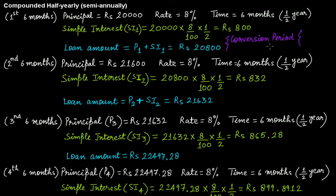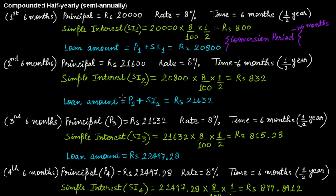The conversion period in the case of interest compounded half-yearly is six months, because after every six months you add interest to the previous principal to get a new principal. This loan amount of 20,800 becomes the principal for the next period. At 8% for half a year, interest is rupees 832. Adding this to the principal at the end of the second six-month period — completing one full year — gives a loan amount of rupees 21,632. This is another conversion period.